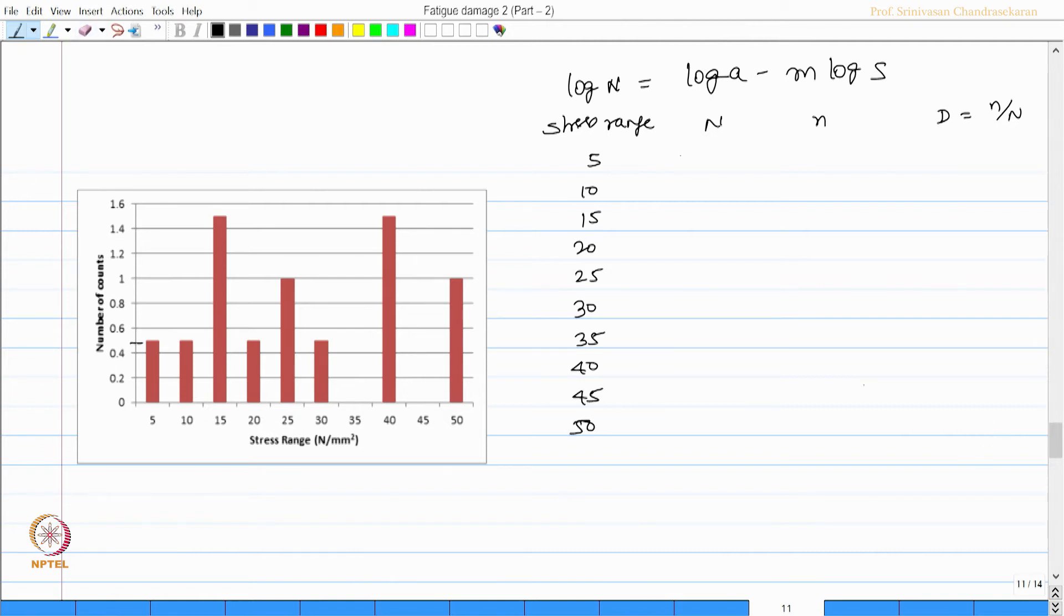N you can see is 1.32. Small n is 0.5 from the figure, therefore this is going to be 3.78 × 10^-13. For 10: 8.26 × 10^10, 0.5, 6.05 × 10^-12. For 15: N is 1.63 × 10^11, and for 15 it is 1.5 and this is 9.19 × 10^-11. For 20: 516,273,7185, this is 0.5, 20 is 0.5.